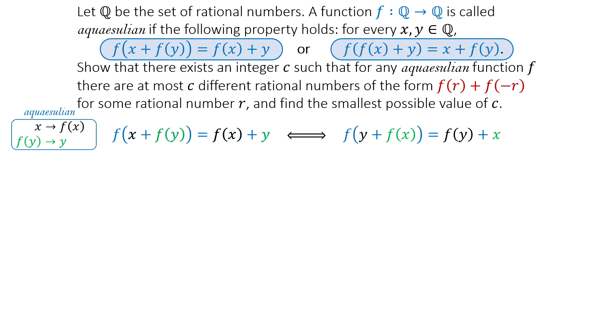According to the problem, when we substitute rational numbers into this expression, we get certain values. But we need to determine how many distinct values are possible for any Aquasoulian function. To get the solution, we start from this expression.